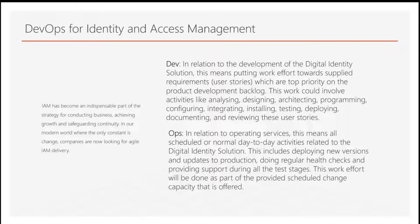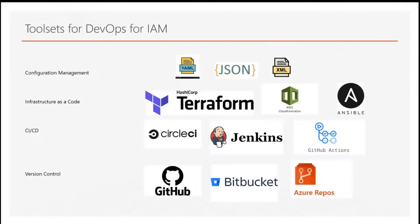Once that code has been developed, it goes through deployment and testing. The operation team then releases that code and continuously monitors the performance and health of the code, and this cycle continues in IAM as well. For example, if you need to add an application to Okta, a developer can write the code so that the application is created in Okta, and the operations team continuously monitors the logs of that application. If there is an issue or a change required, they can raise a change request, the developer works on the change, and it is pushed into the production environment — making this a very swift process.